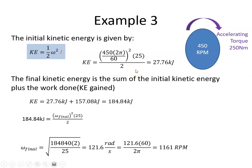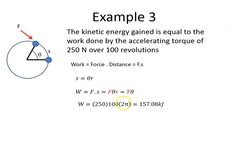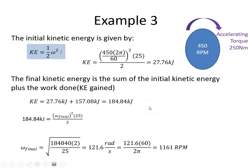We gave it extra energy. As we determined in the last part, we've given it some extra work, some extra energy of 157.08 kJ. So we're going to add that 157 kJ to the 27.76 kJ that it had. Its total kinetic energy now is 184.84 kJ.